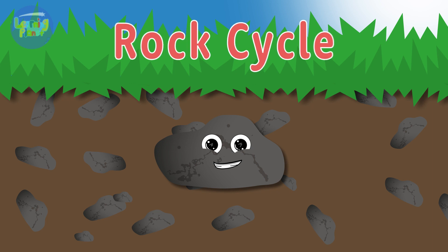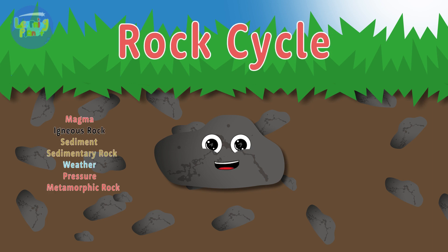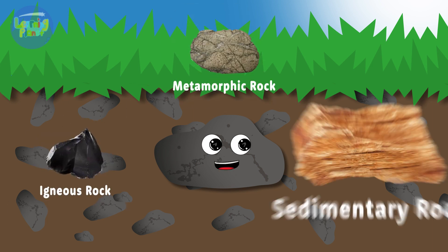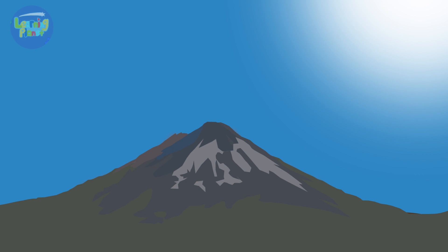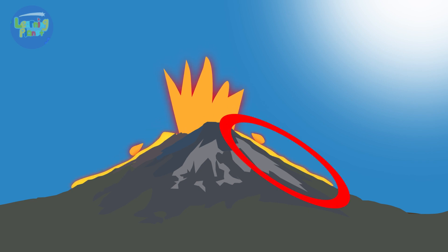What is the rock cycle? It's about the three types of rock that can change over time. It all starts from the volcano when it bursts lava onto all directions. In this section you can see the lava cooling down into a hard rock.